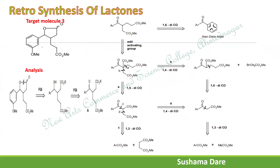The next target molecule again contains a carbon-oxygen linkage. The first approach is to disconnect the carbon-oxygen bond in the direction of oxygen. Following the same route, it gives OH and the remaining part is written as COR. In the previous example we wrote OH, but here we write OR because there is an ester functional group at that position.